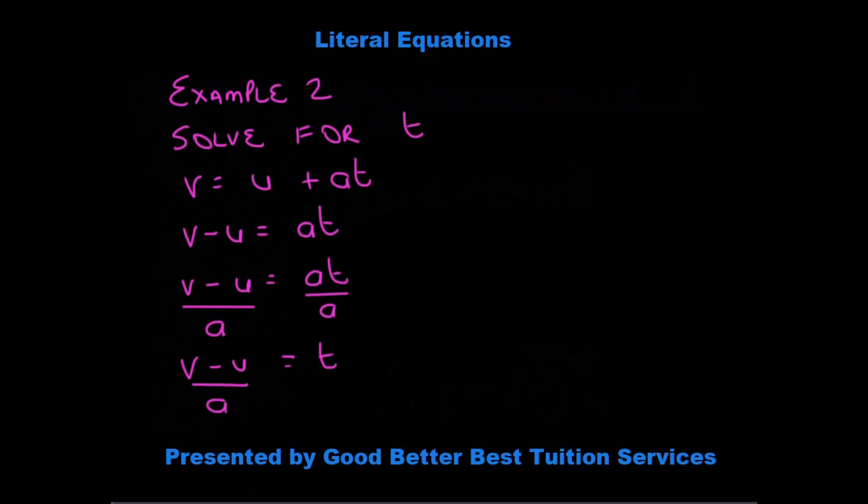Now in this case, they ask us to solve for t. So we need to isolate the t. We have v is equal to u plus at. How do we get rid of the u? It's positive on this side. We take it over the equal to sign and it becomes a negative.